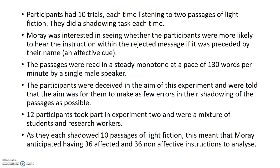Participants had 10 trials, each time listening to two passages of light fiction and completing a shadowing task. Moray was interested in seeing whether participants were more likely to hear the instruction in the rejected message if it was preceded by their name — an effective cue. The passages were read in a steady monotone voice at 130 words per minute by a single male speaker. Participants were deceived about the aim of the experiment and were told that the aim was for them to make as few errors in their shadowing as possible.